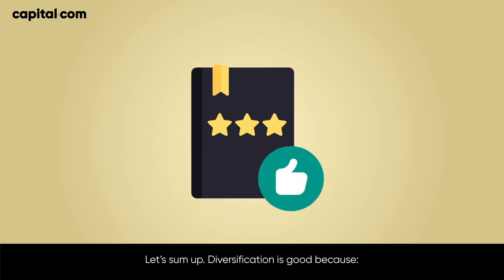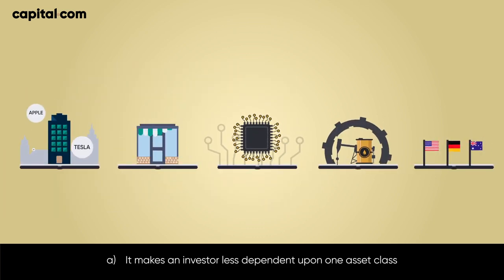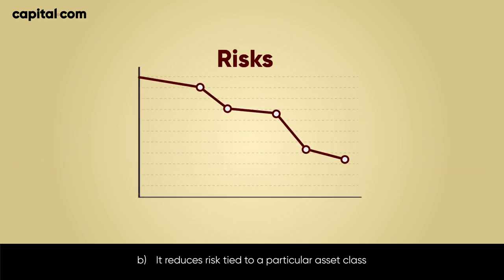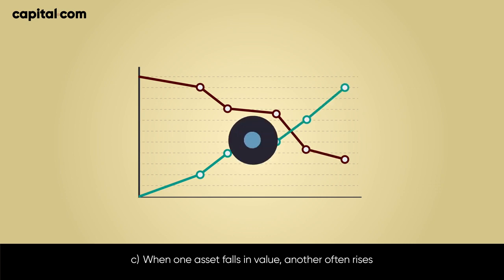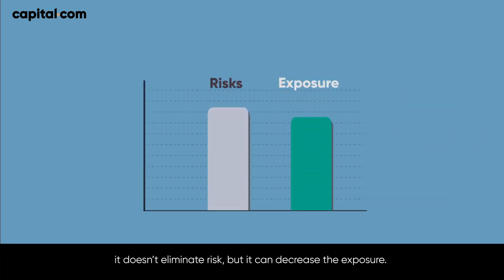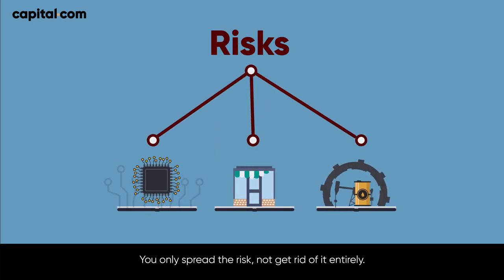Let's sum up. Diversification is good because it makes an investor less dependent upon one asset class. It reduces risk tied to a particular asset class. When one asset falls in value, another often rises. With all the advantages that come with portfolio diversification, please remember it doesn't eliminate risk, but it can decrease the exposure. You only spread the risk, not get rid of it entirely.